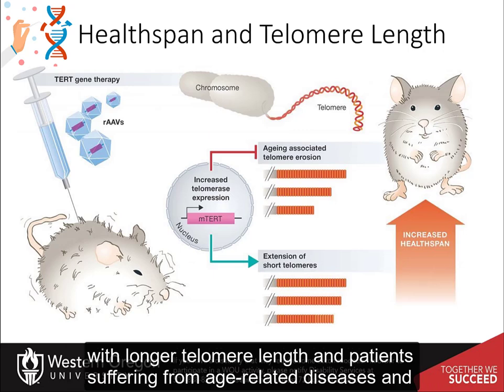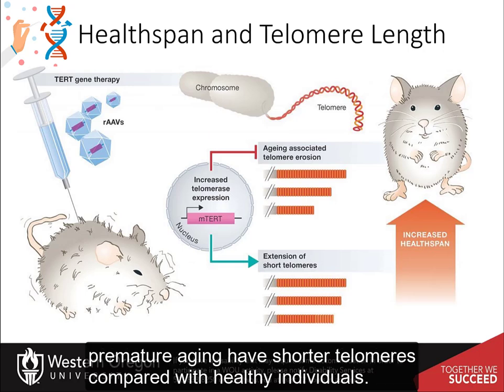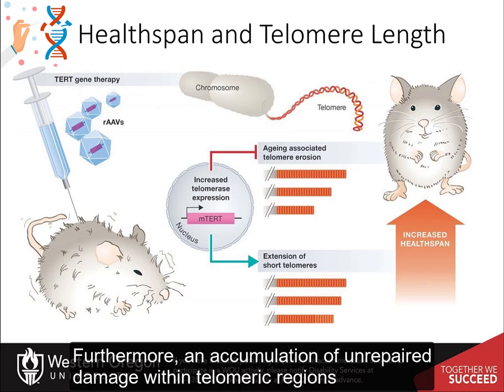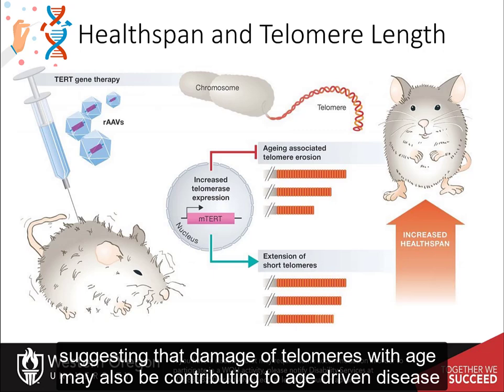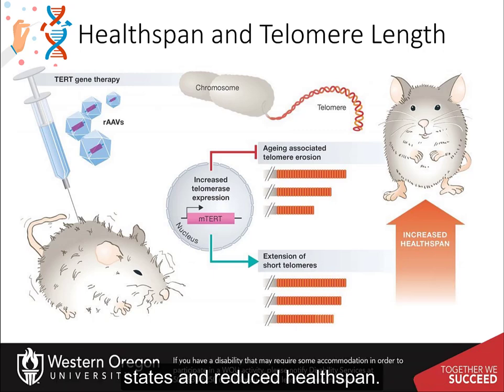Healthy lifespan in humans is positively correlated with longer telomere length, and patients suffering from age-related diseases and premature aging have shorter telomeres compared with healthy individuals. Furthermore, an accumulation of unrepaired damage within telomeric regions has been shown to accumulate in aging mice and non-human primates, suggesting that telomere damage with age may also be contributing to age-driven disease states and reduced health span.